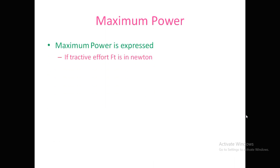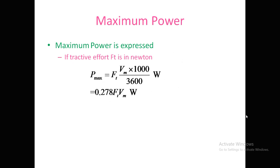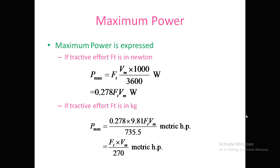The maximum power formula is: P_max equals tractive effort Ft multiplied by velocity Vm multiplied by 1000 divided by 3600 watts, which simplifies to 0.278 × Ft × Vm watts. If Ft is in kilograms, then P_max equals 0.278 × 9.81 × Ft × Vm divided by 735.5 metric HP, which simplifies further to Ft × Vm divided by 270 metric HP.